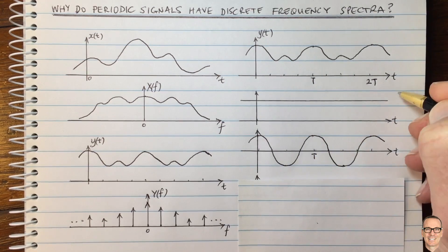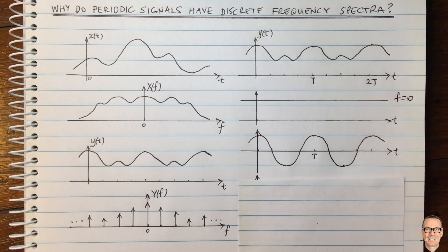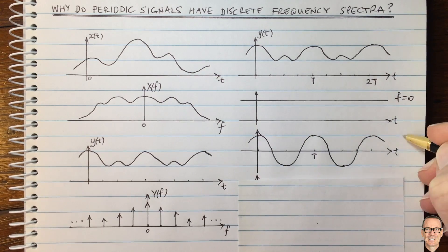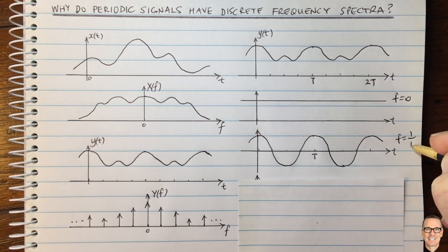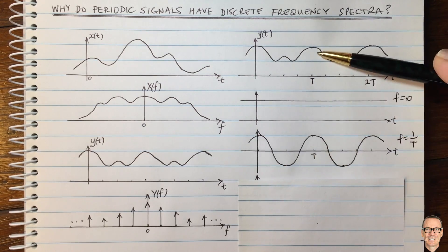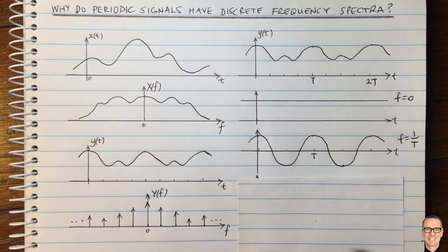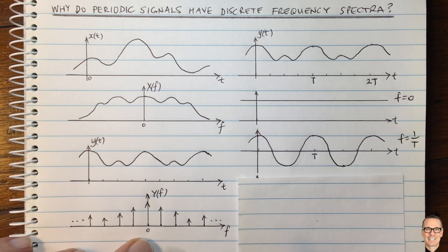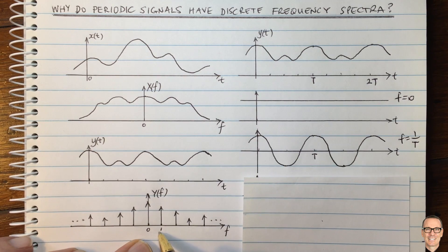So this is frequency equals zero, the constant one. This is frequency equals one divided by T. And we can see clearly that's going to be a significant component in there. Now let's think, and that over here, I should say, is this component here, one divided by T over here.